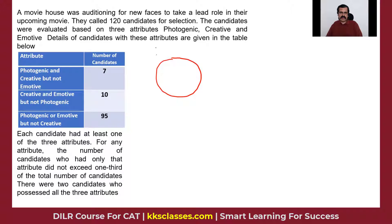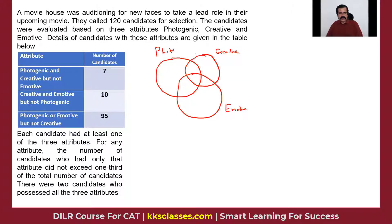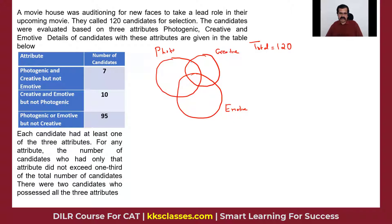So a three-element Venn diagram — we're talking about photogenic, creative, and emotive. The total is 120. I'm not using any notations like union and all that. We can do Venn diagrams pretty simply — two-element, three-element, four-element — and CAT has also asked five-element Venn diagram questions. So once you understand the concepts, it's very easy. Let's not complicate things with unnecessary notations.